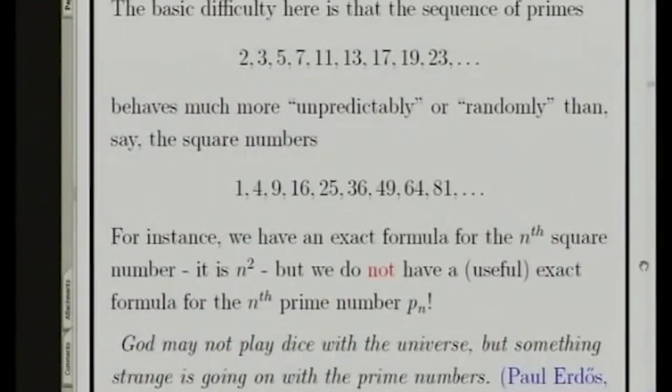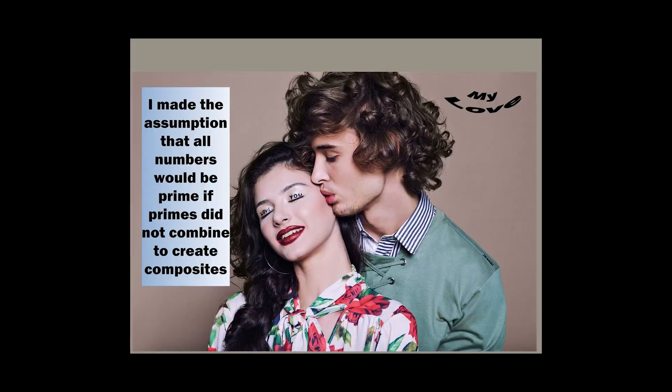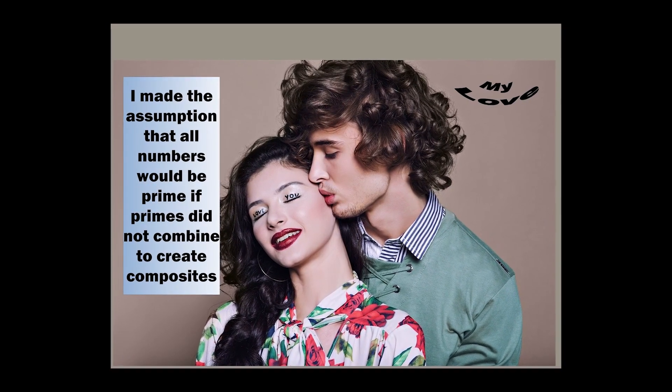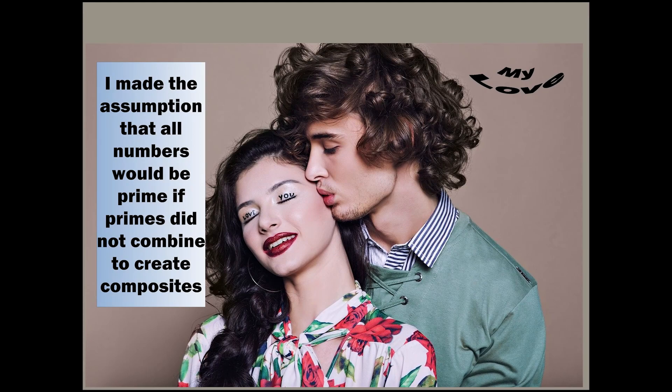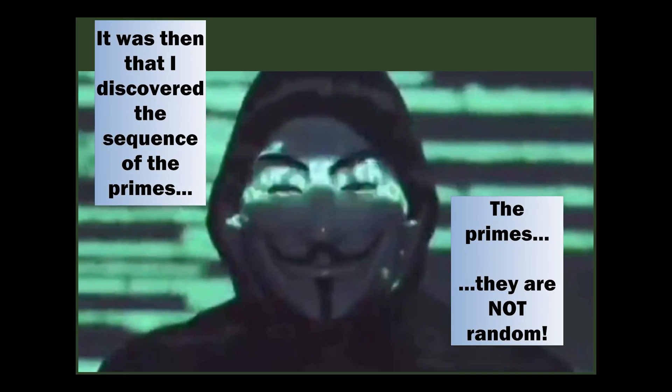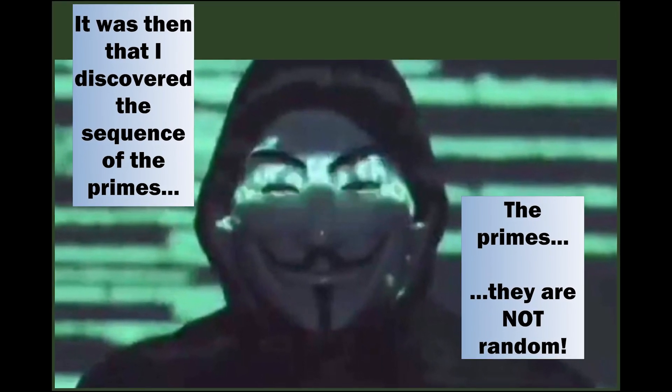Here's the sequence of primes: 2, 3, 5, 7, 11. I mean, it's increasing, but other than that, they behave in a very sort of random manner. Much more random than other sequences. I made the assumption that all numbers would be prime if primes did not combine to create composites, my love. It was then that I discovered the sequence of the primes. The primes, they are not random.